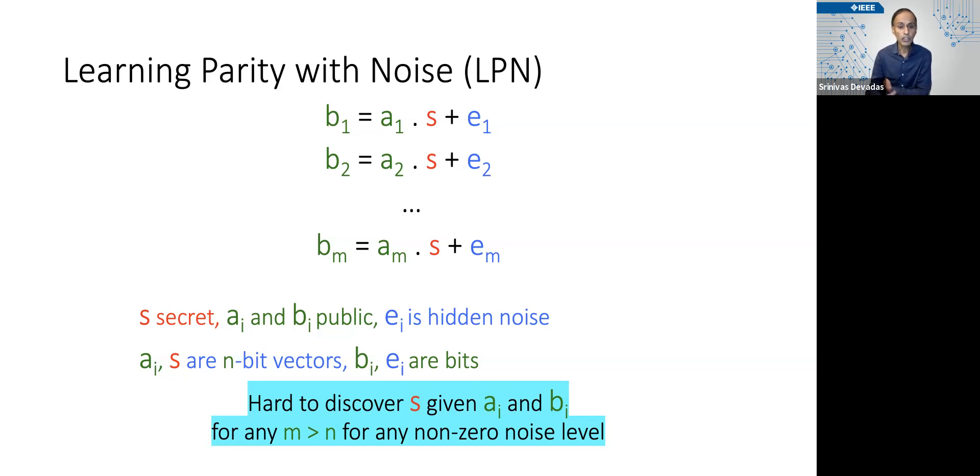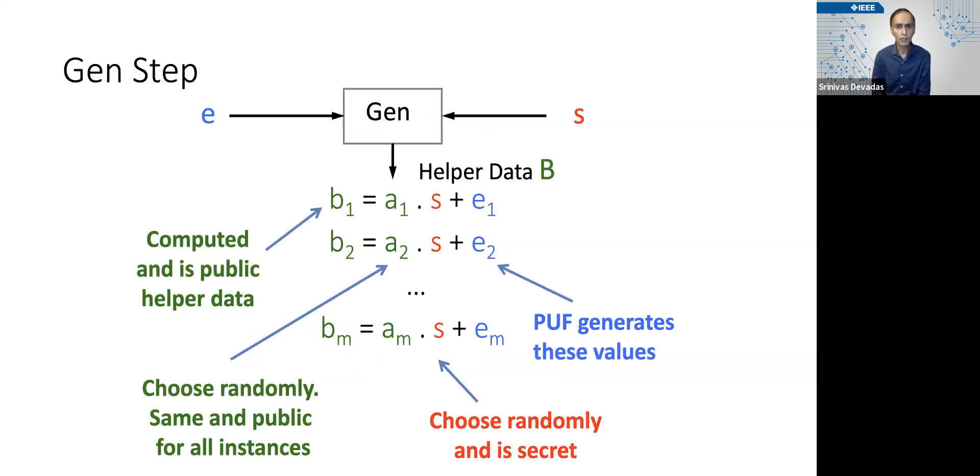And this is true for any M greater than N, where you can generate 1,000 equations, and as long as each of the eᵢs correspond to random noise, then it doesn't matter that s only has, let's say, 100 bits in it. LPN is still hard. This is going to be important, so remember that.